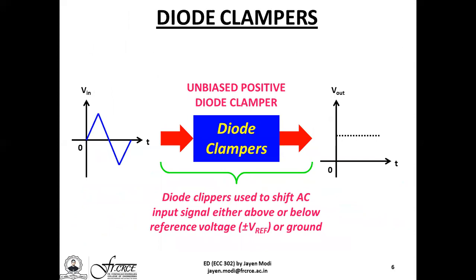Before moving to the different circuits in diode clampers, their operating principle, and how they work, we will use an animated approach similar to how we explained diode clippers. This will help you understand the operating principle of diode clampers in a simple manner. I have drawn a triangular waveform because it is easy to animate — a periodic alternating AC input signal in the form of a triangle wave having its own time period and frequency.